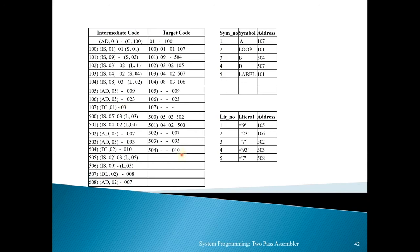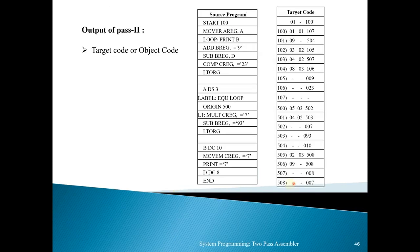For the declarative constant (DC) statement, the constant number is written in the target code — giving '- - 010'. There is a key difference: for declarative storage (DS) no value is written, but for declarative constant (DC) the constant value is written. Next statements: (IS,02)(03)(L,05) — MOV-M, CREG, fifth literal address = 508, giving '02 03 508'. Then (IS,09)(-)(L,05) — PRINT, fifth literal address = 508, giving '09 - 508'. Then DC statement: '- - 008'. Finally, the END statement produces '- - 007'. From the source program, we obtained the target code using the symbol table and literal table. This target code is the final output of the two-pass assembler.